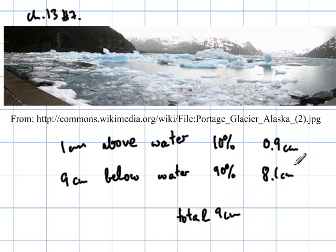And that's due to the density of ice, which is 0.9 grams per cubic centimeter. And that tells us that always 90% is below the water and 10% above water.